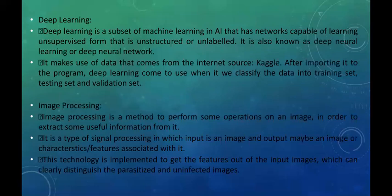Deep learning is a subset of machine learning capable of learning in an unsupervised manner from labeled or unlabeled data. It is also known as deep neural learning. It makes use of data from internet sources — in our case, we used datasets from Kaggle.com. Deep learning is applied to classify the data into training set, testing set, and validation set.